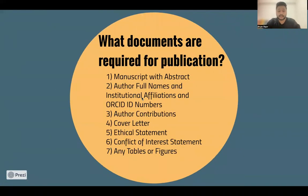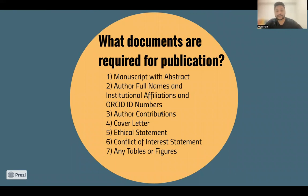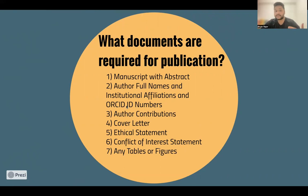Now, preparing publication documents. The manuscript with the abstract is your written paper. Make sure to include authors' full names, institutional affiliations, and ORCID ID numbers. Every researcher should get their ORCID ID number — simply type ORCID ID into Google, click the first link, and follow the instructions. It takes about five to ten minutes. Always save this number; it helps identify you uniquely in the world of research where someone may share your name. Get your entire team to obtain ORCID ID numbers.